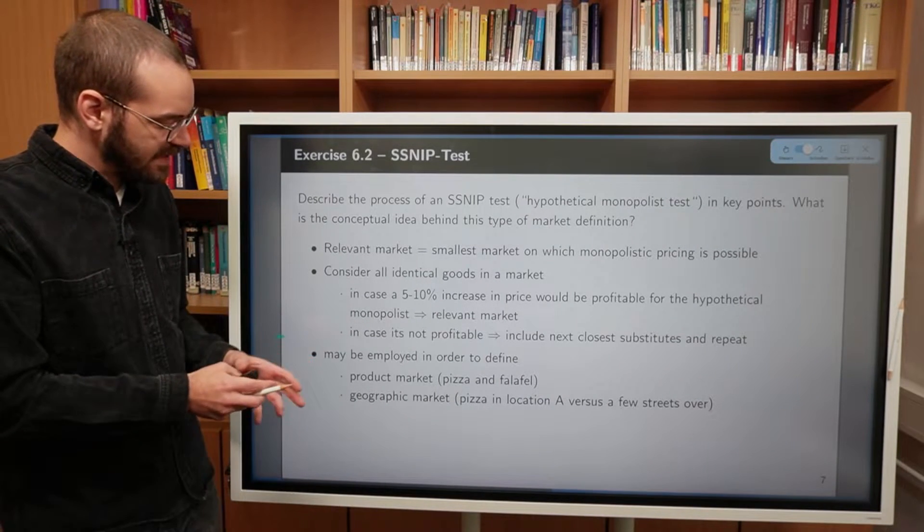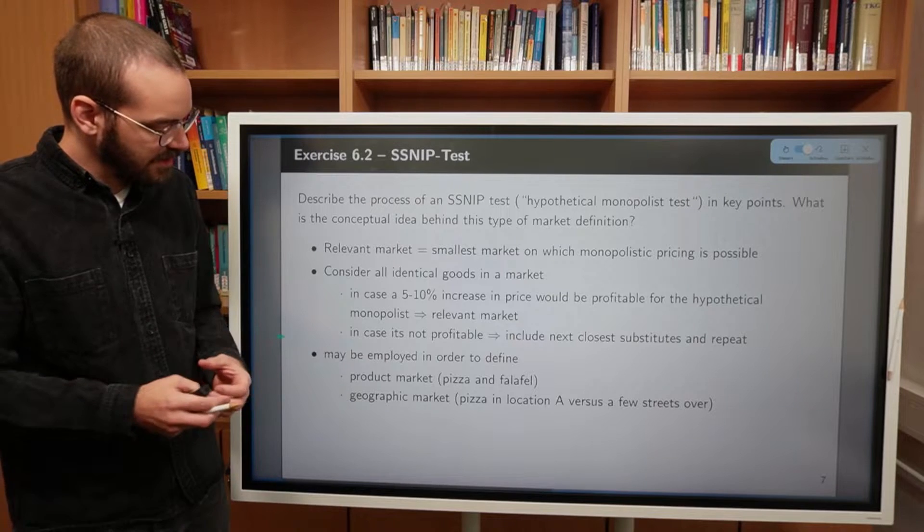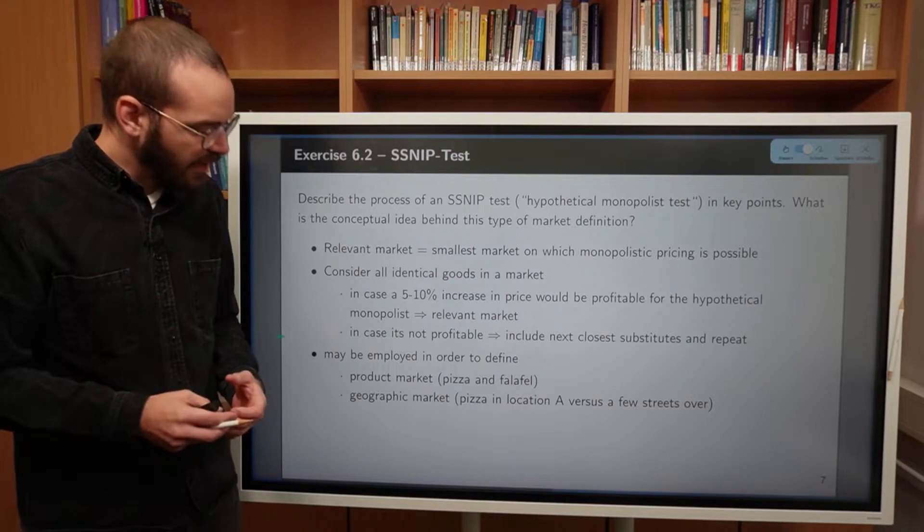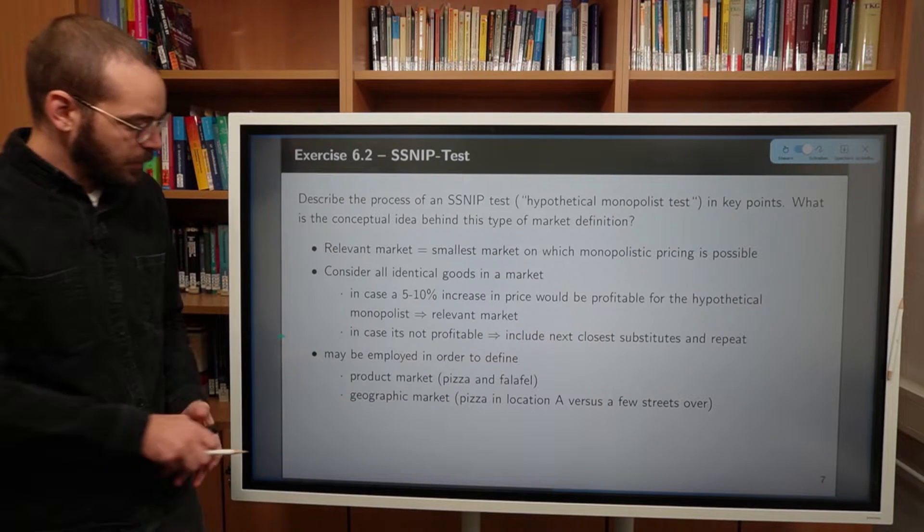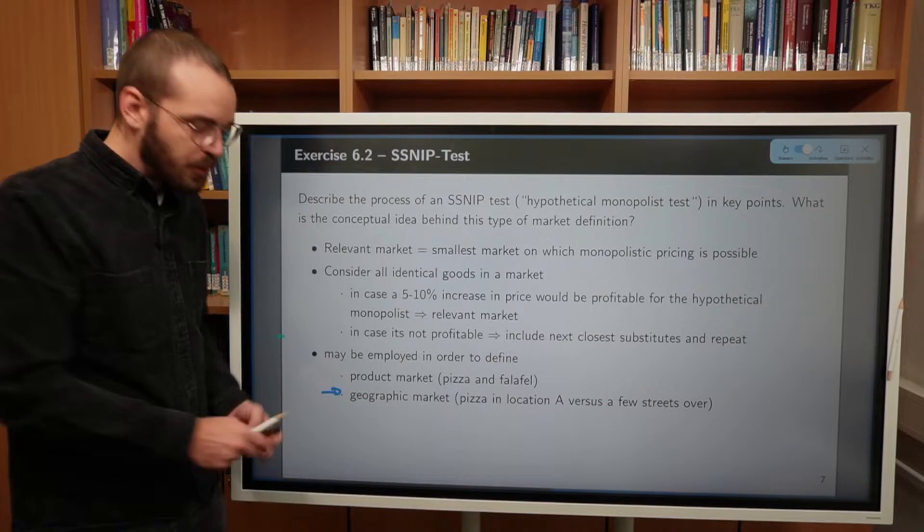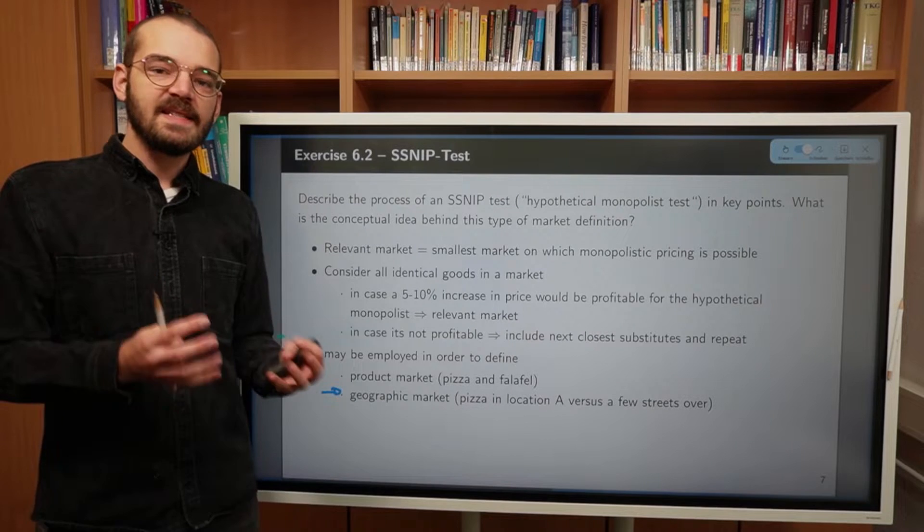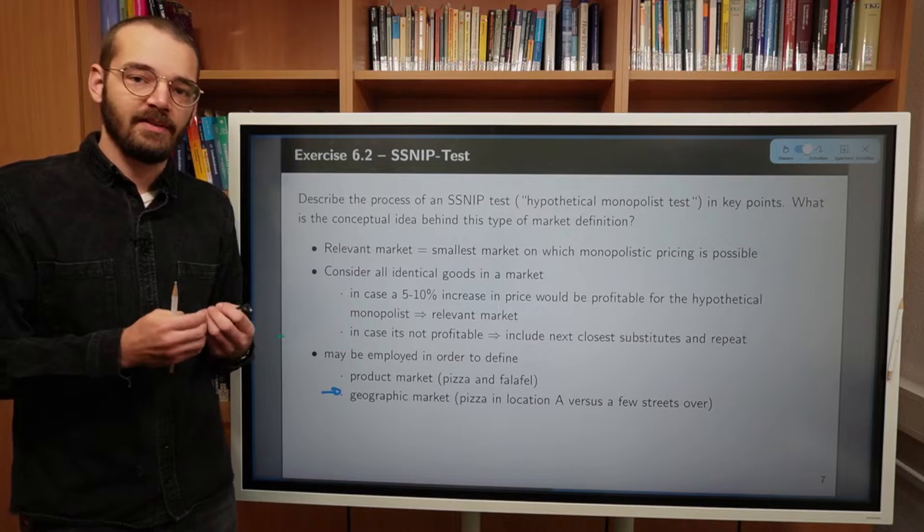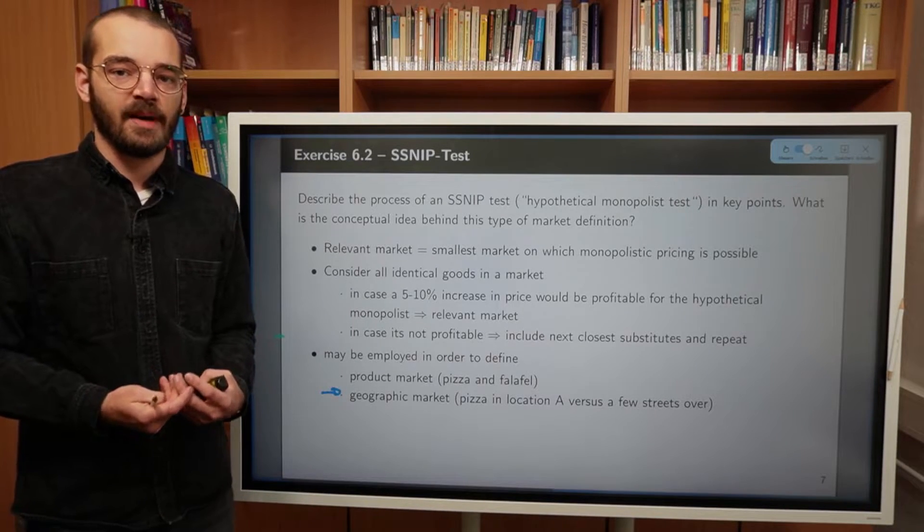And then the second concept is not the product market but instead the geographic market. And what this refers to is, now we are really considering basically the same product but at two different places. So in a very literal sense geographic market. For example, a pizza place in some location A and then maybe a pizza place that is a few streets over.